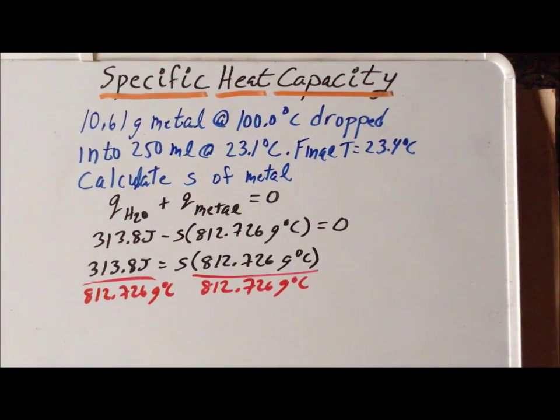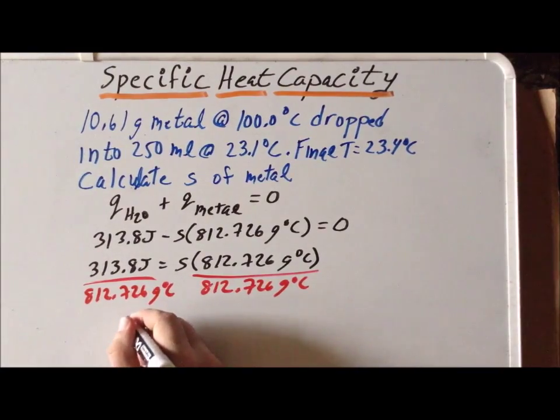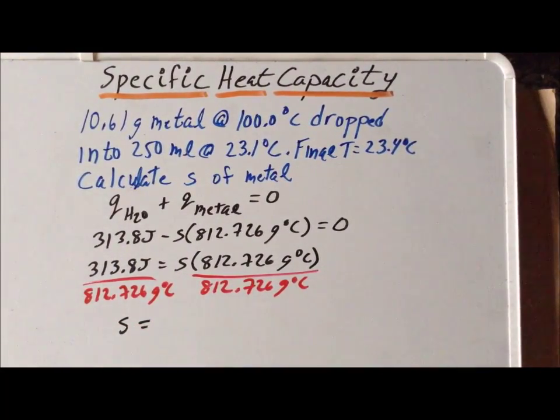And once we solve, we find that S, the specific heat capacity of our unknown metal, is equal to 0.386.